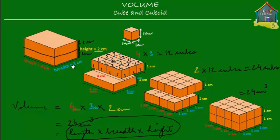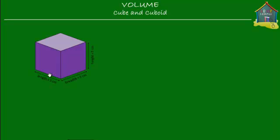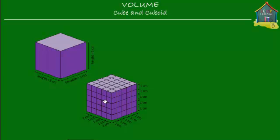That's the formula to calculate the volume of any cuboid as well as a cube. A cube is a special cuboid — special because its length is the same as its breadth, which is the same as its height. So a cube is simply a cuboid with equal sides, and the formula for calculating the volume of a cube is the same as that for a cuboid. If you were to make this cube using smaller unit cubes, you will see that there are 125 of them.